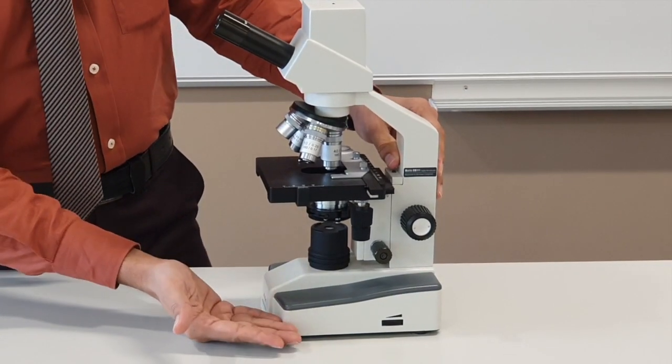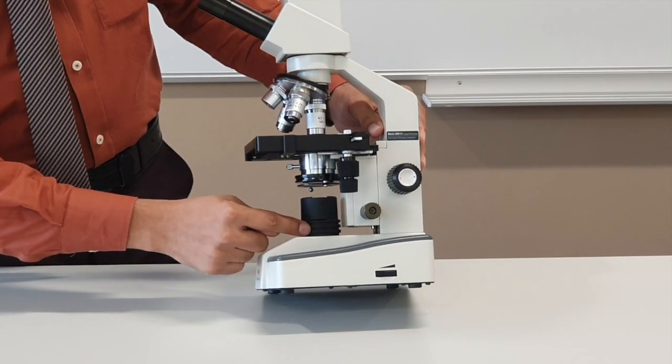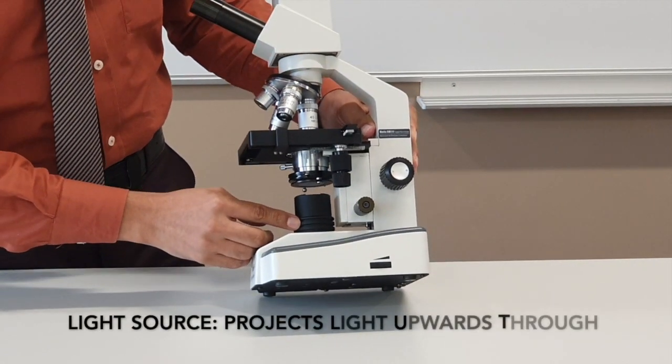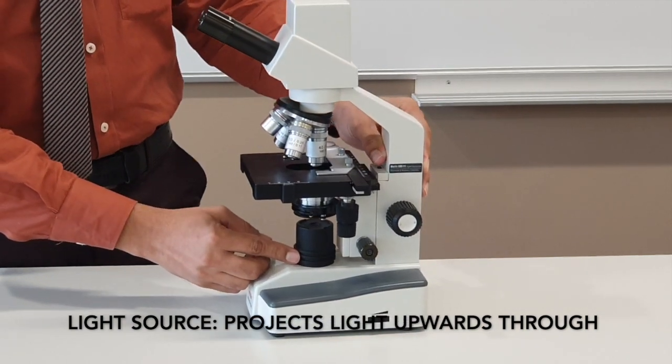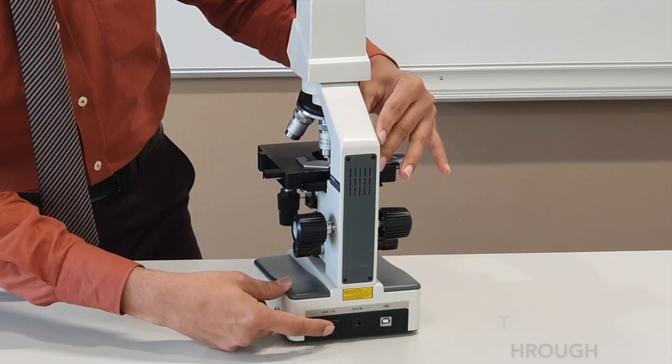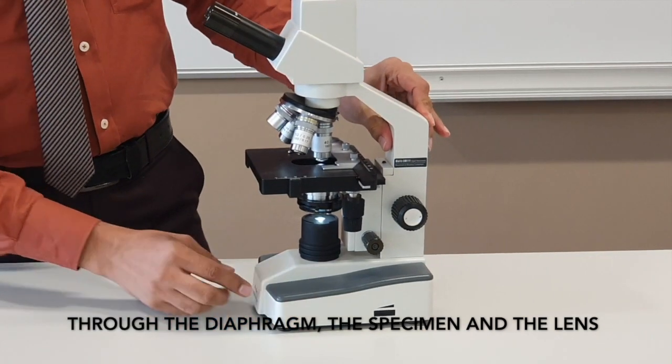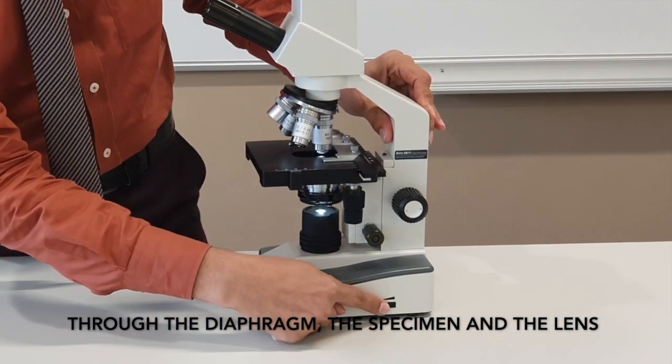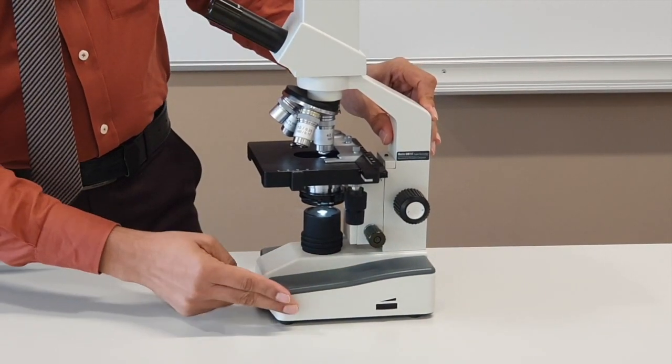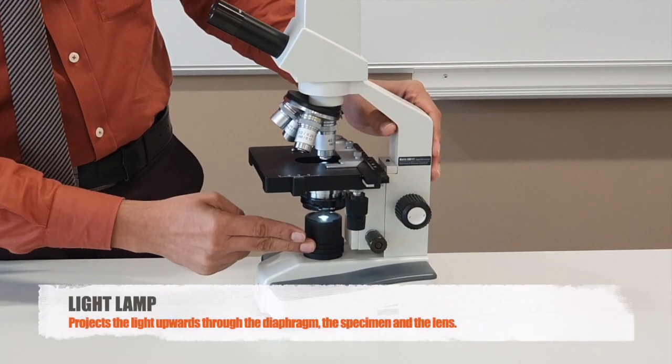If you go a little above the base, we have this area called the light source. Most students try to look into the microscope but don't see anything. Don't forget that behind each microscope you have a small button and you need to turn it on. That will help you to see through the microscope. To increase or decrease light intensity, you have to use this button.